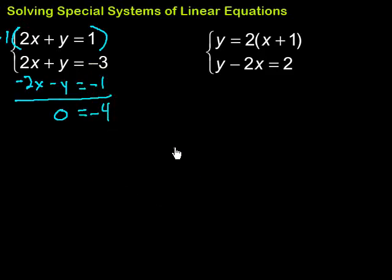Now, yikes, we lost all our variables. So what does that mean? Well, that means there's something special going on here. And if we end up with something that's not true, like here for example, zero is not equal to negative four, what I want to do is, well, that's going to mean there's no solution to my system. Because I lost all the variables, I ended up with something that's not true, so that means there's no solution to that system.